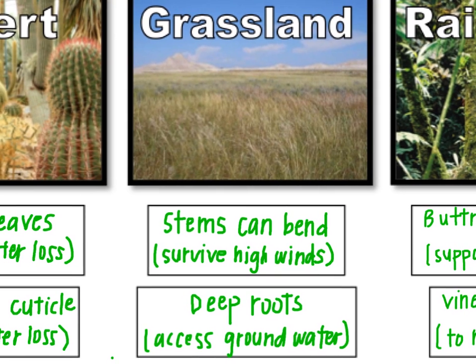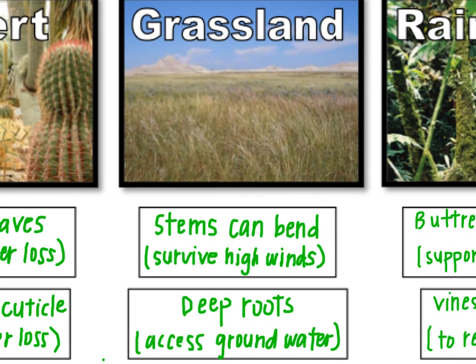The second environment is a grassland. Plants have to fight really high winds because there are no trees to break up the wind — it can just pick up speed across the plains. So a lot of times, plants that live in a grassland have to have very flexible stems so that when the wind blows, they don't break, and they'll bend with the wind.